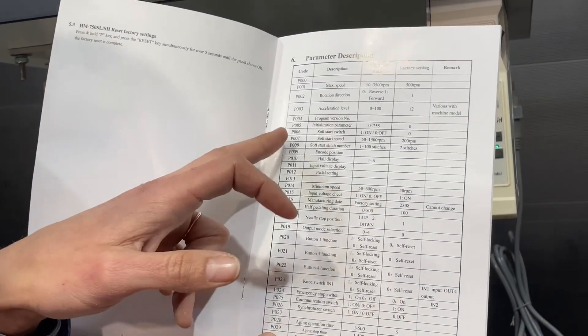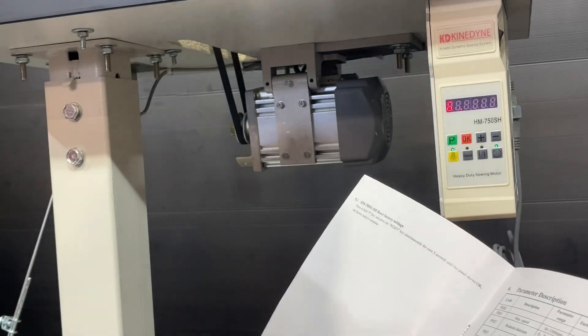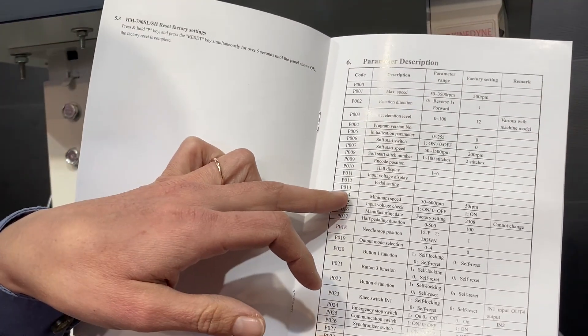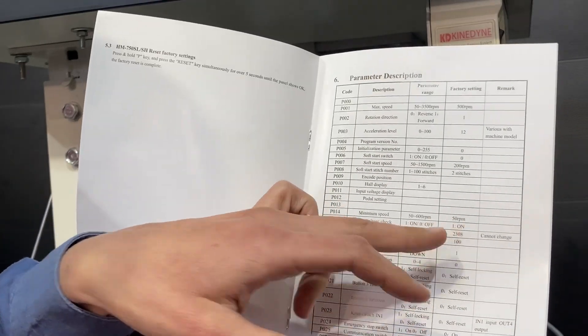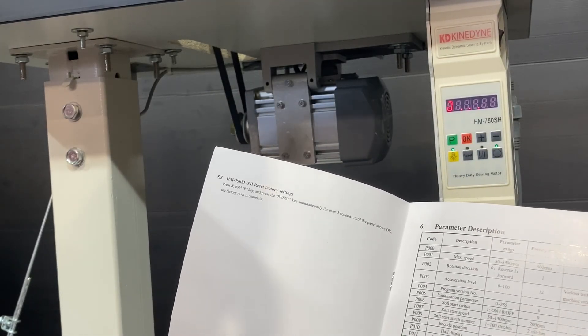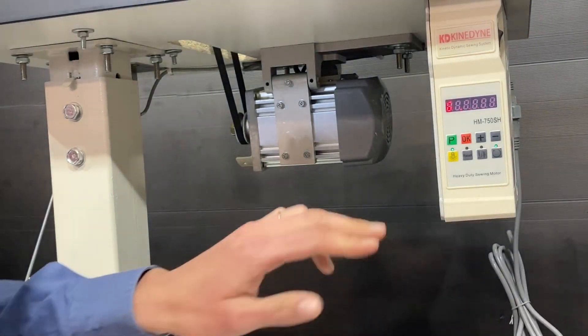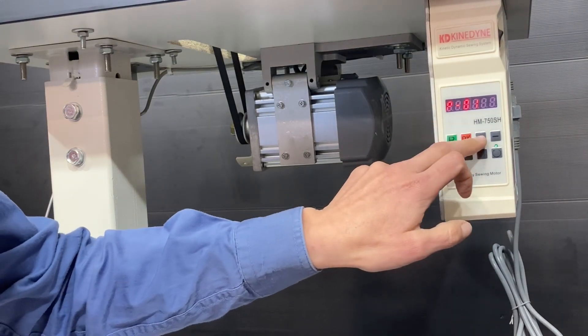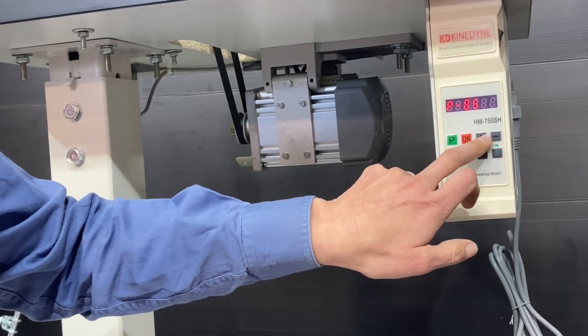So in the parameter lists we have here the soft start and the soft start speed. That may be something that you want to change. We have also here the minimum speed, that could be something that you want to change. The factory setting is 50 RPM because that is the slowest that the motor can run. But if you are wanting to go faster, you can bump that up. So to edit any of these parameters, we press the P and the OK button together and it will bring up P01. And we just use these plus and minus here to go through the list.